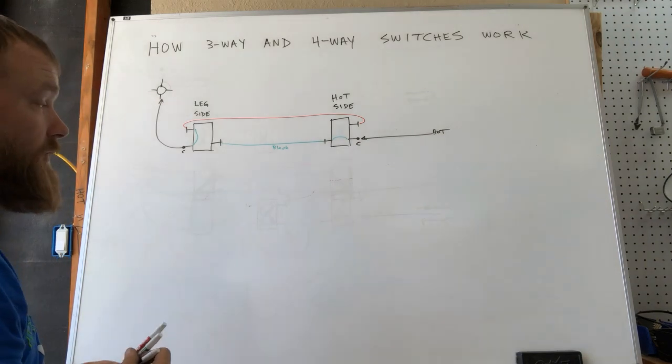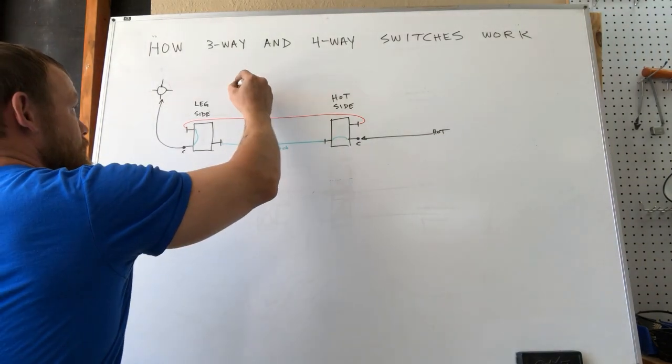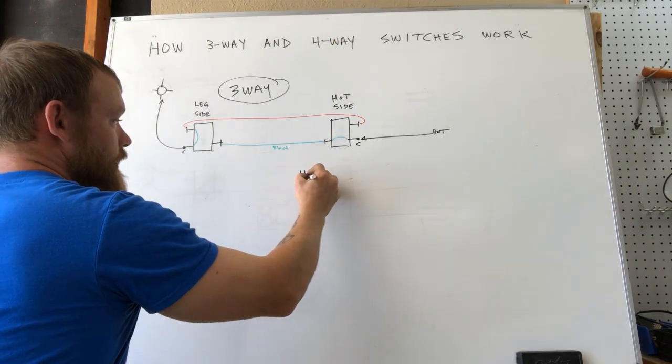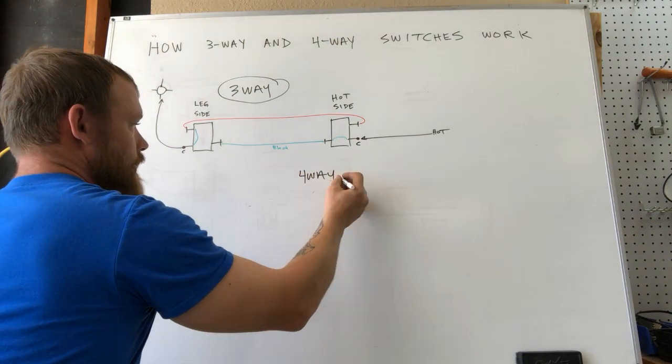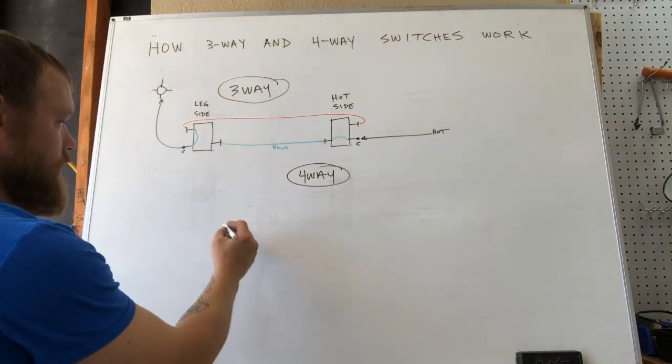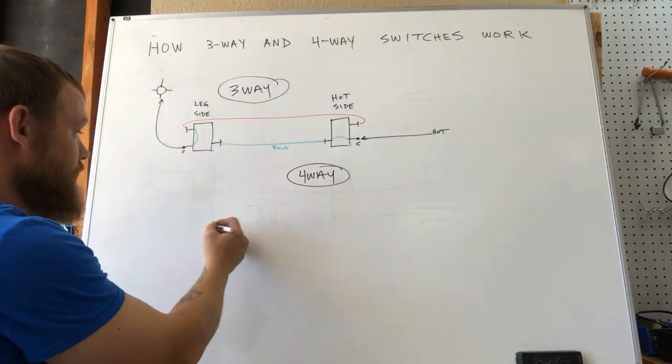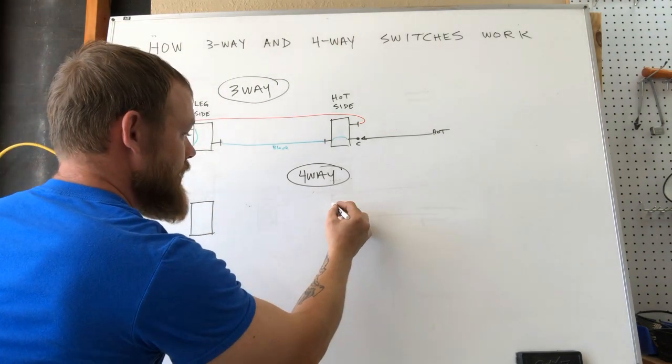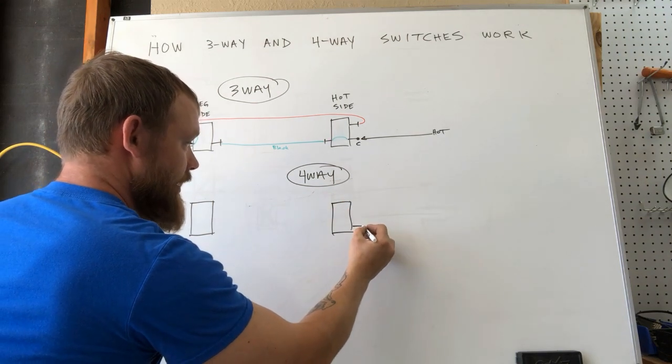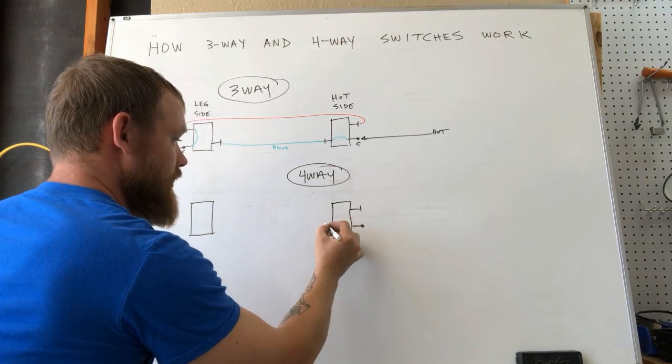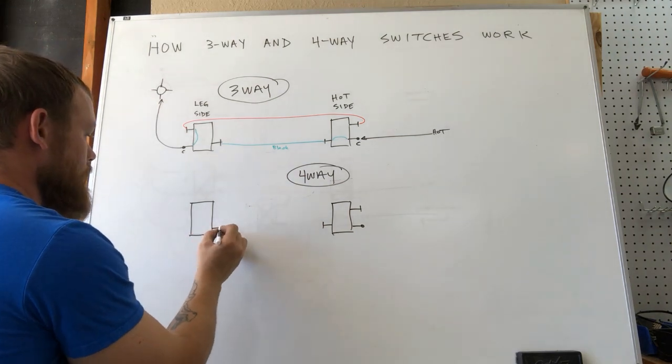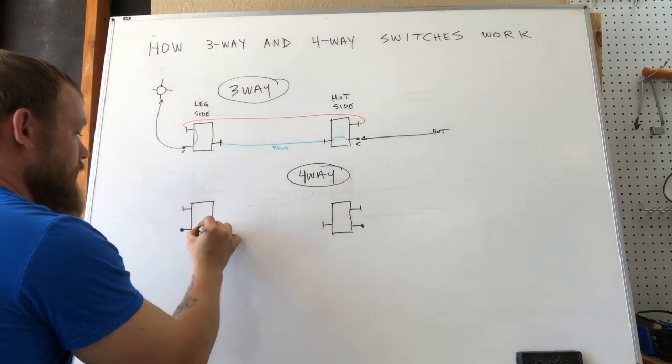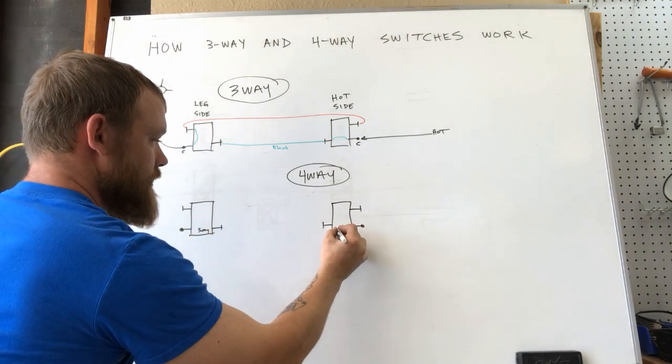So next is going to be our four-way. This is three-way. This is going to be four-way. So just like we're going to have on a three-way setup, you're going to have your two outside switches that are three-way switches. So you still have a common terminal, gold, gold. Over here you've got gold, gold, common. So this is a three-way. This is a three-way. And in the middle, you're going to have a four-way.